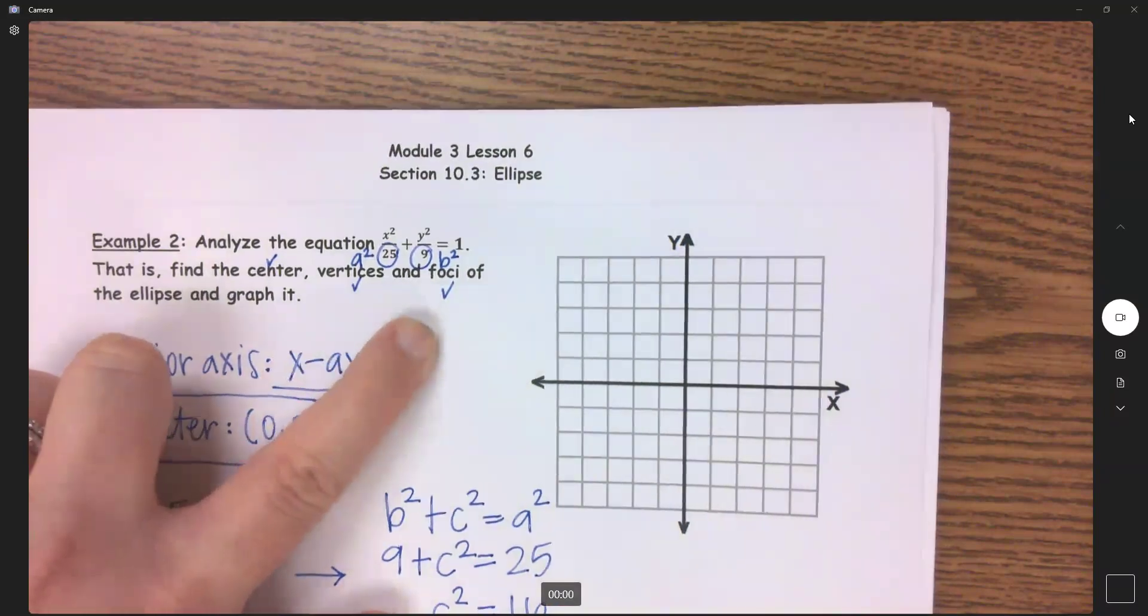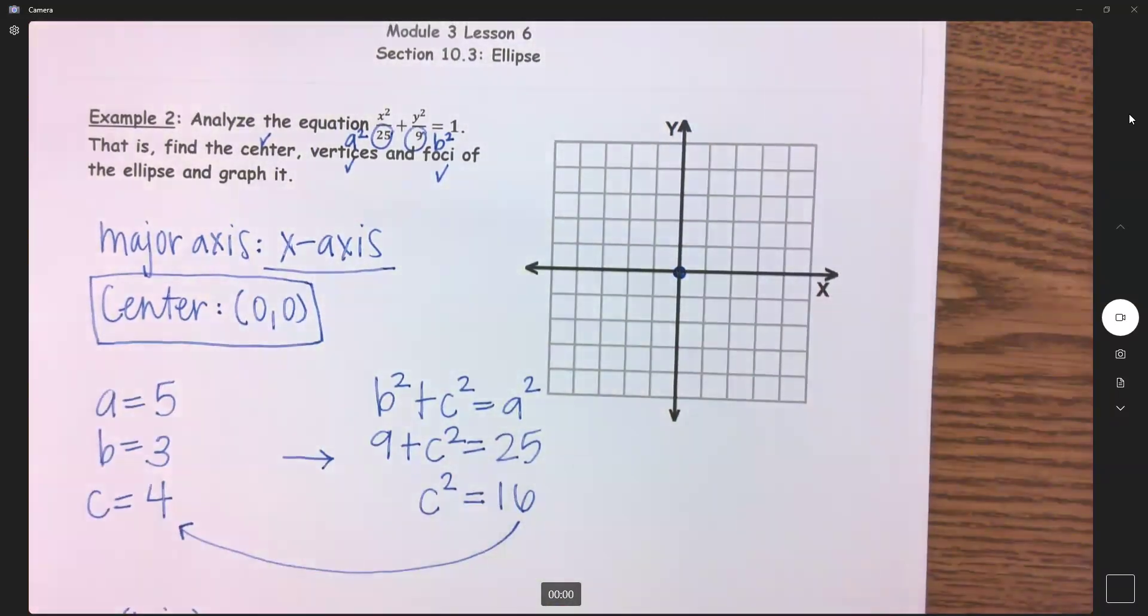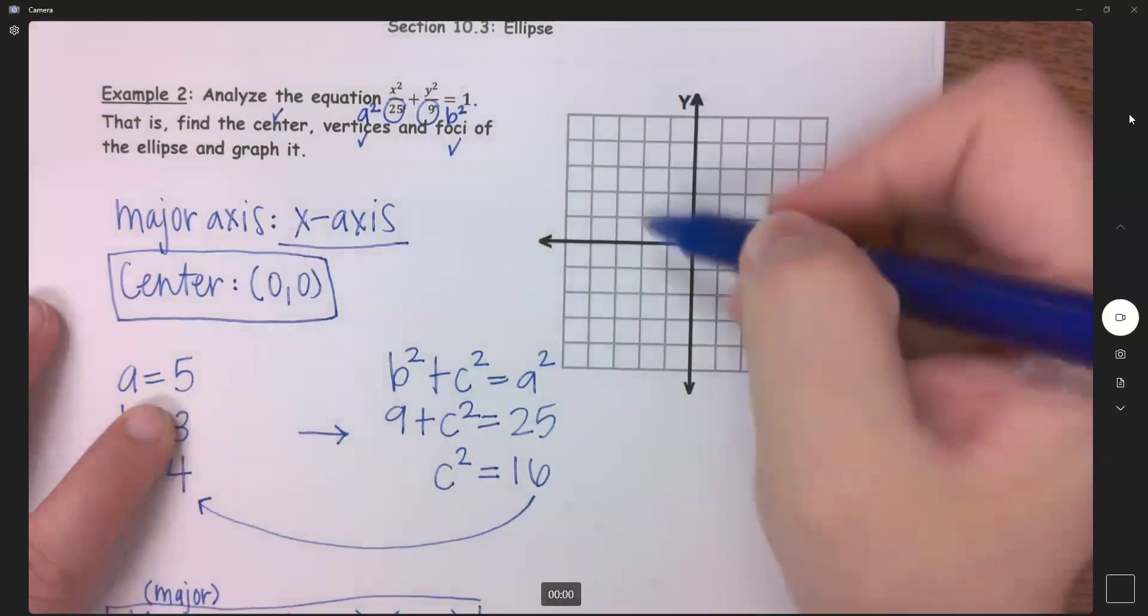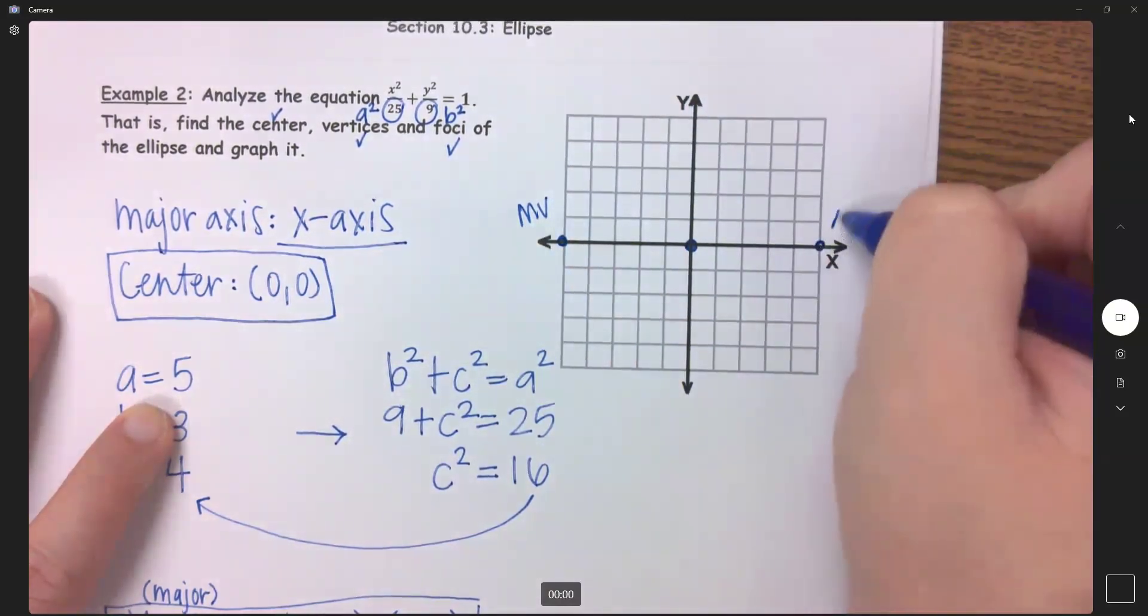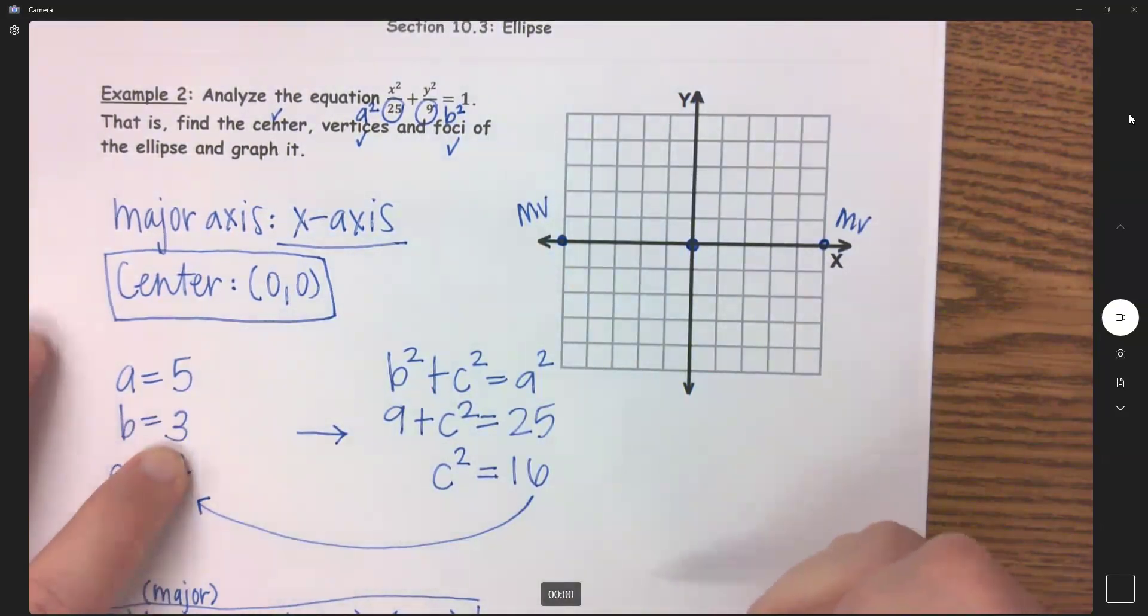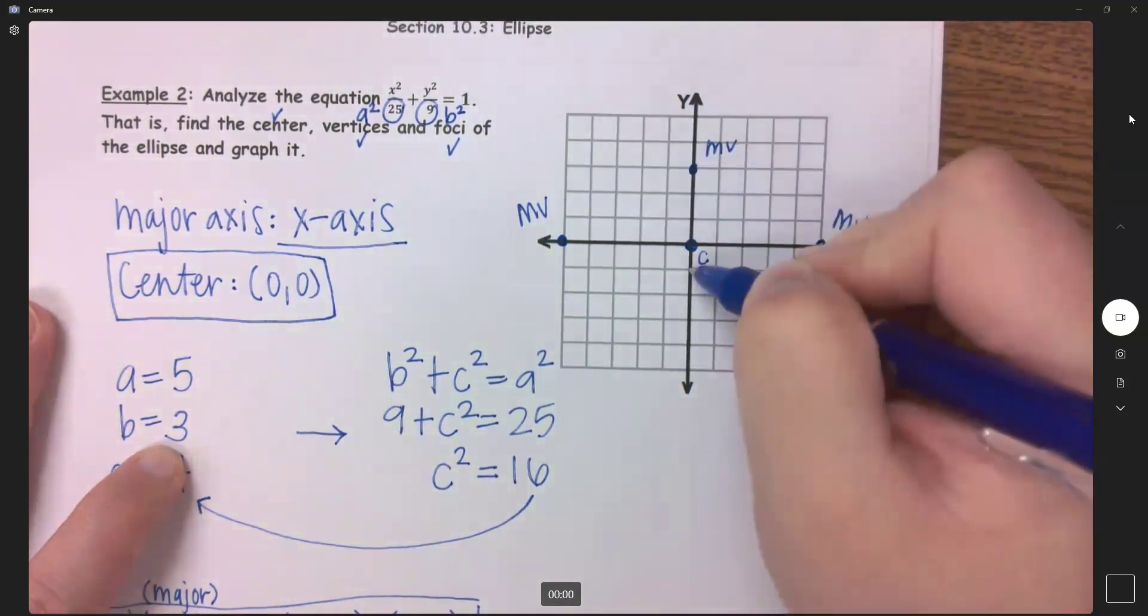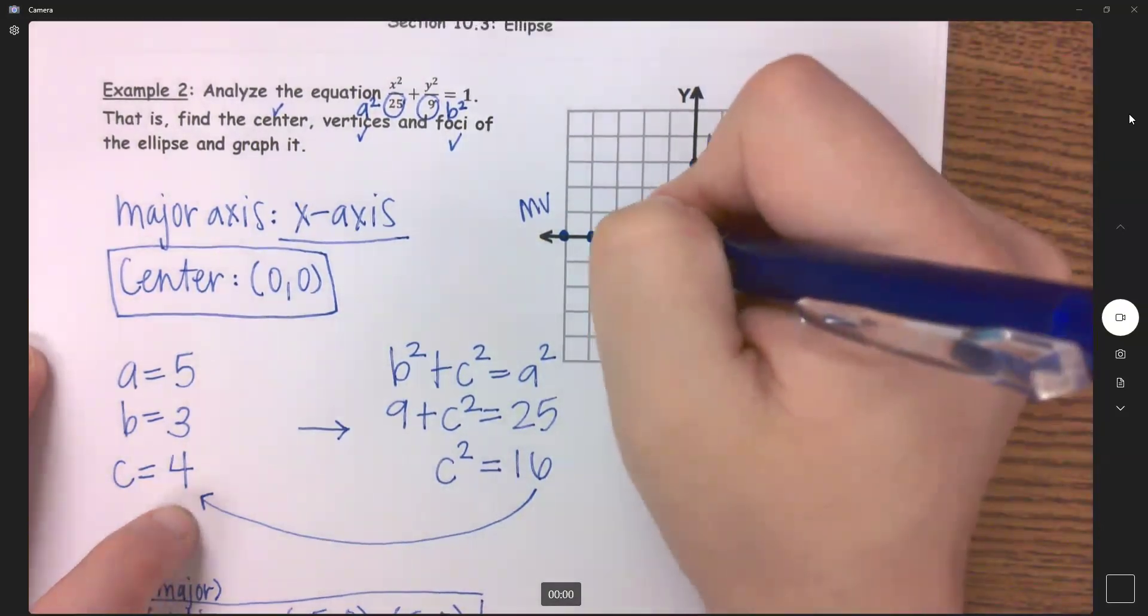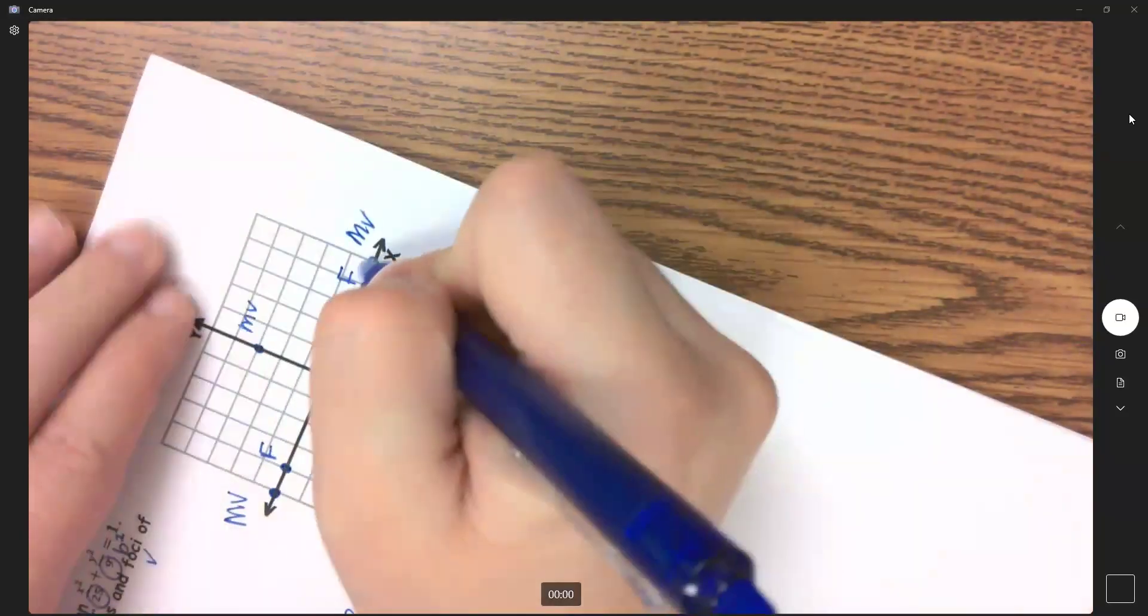So now we need to graph it. So my center is at 0,0. And I personally, you can use these since we've already found them, but I just kind of use my a, b, and c when I'm graphing. I know a is 5. So I'm going to go 5 over here for my capital MV, and 5 over here for my capital MV. My B represents my minor vertices. So from my center, I'm going to go up 1, 2, 3, lowercase mv, and down 1, 2, 3, lowercase mv. And then my foci, I'm going to go 4 over here and 4 over here. And now connect all of your vertices together.